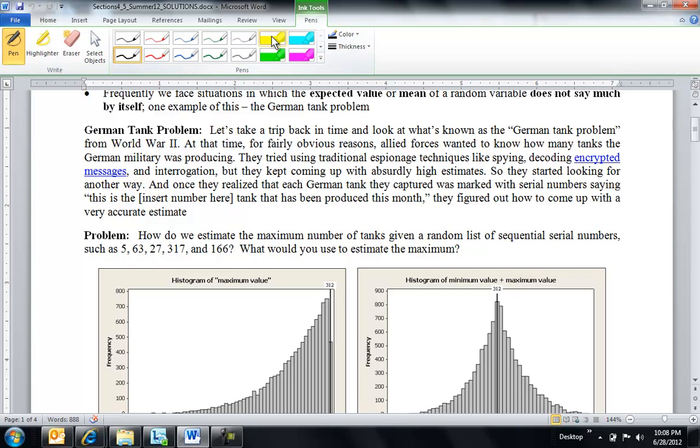The German tank problem is a pretty famous problem. What happened during World War II is the Germans had a bunch of tanks, and we would capture a tank and try to determine how many total tanks the Germans had. We were able to estimate this because they had sequentially ordered the numbers of the tanks.